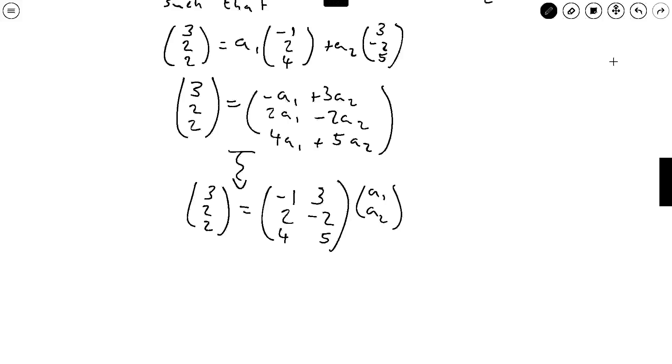Okay, so now the question is does this system of equation have solutions? And if it has solutions then a1 and a2, then (3,2,2) is in the span of these two vectors and if it doesn't have solutions then it's not.